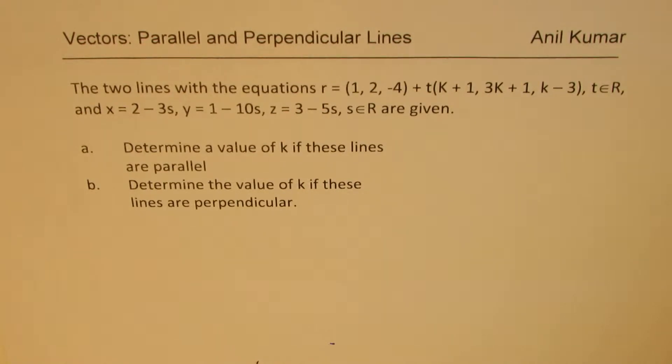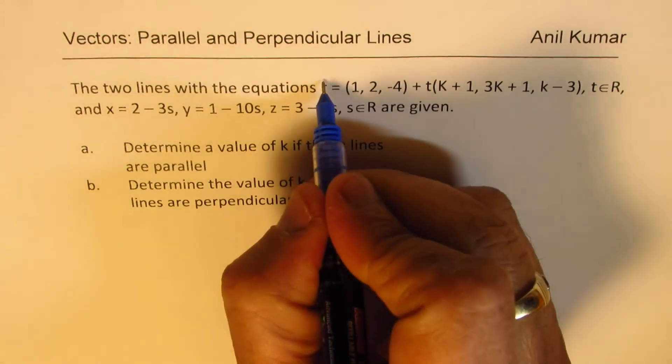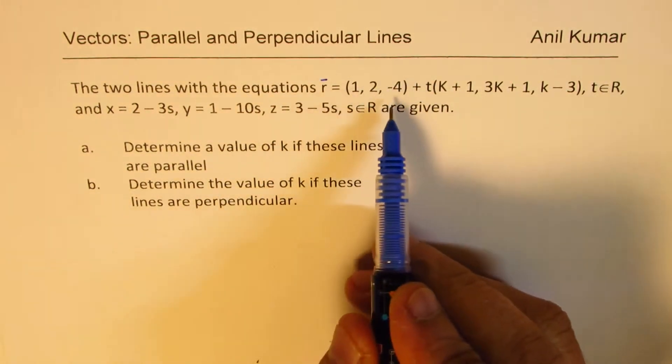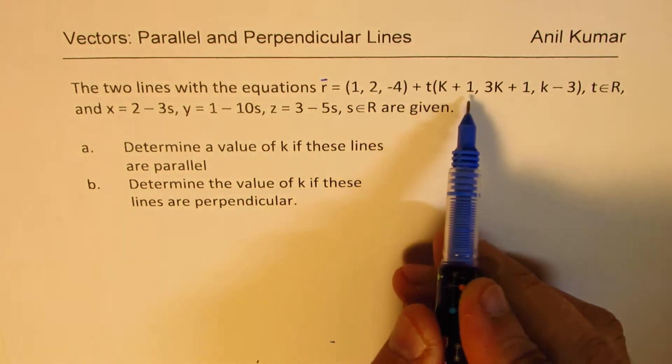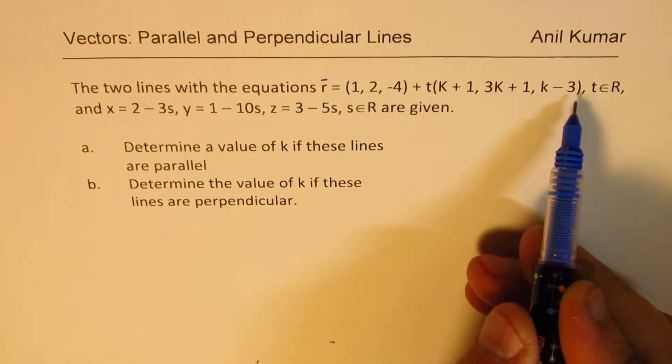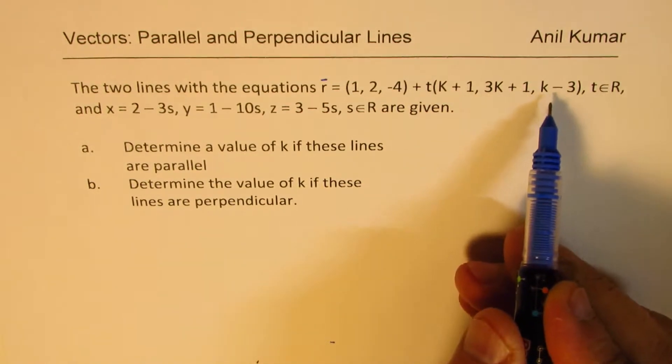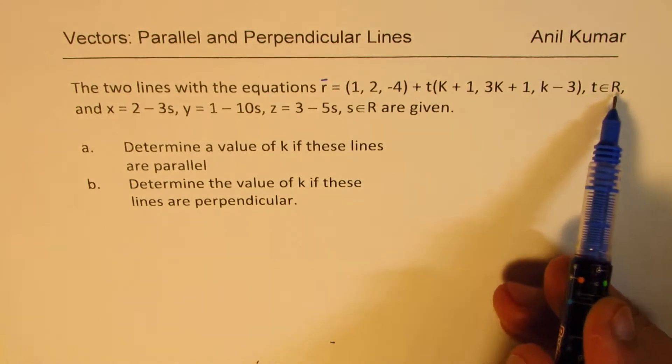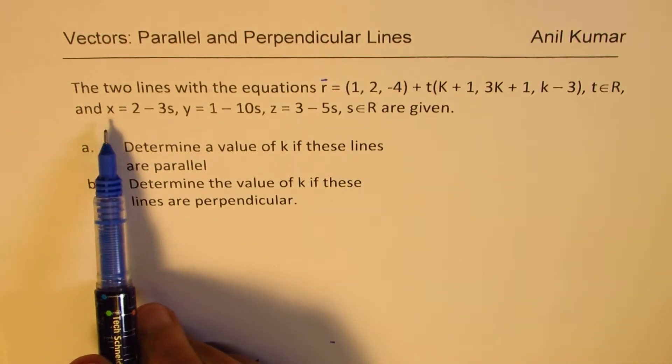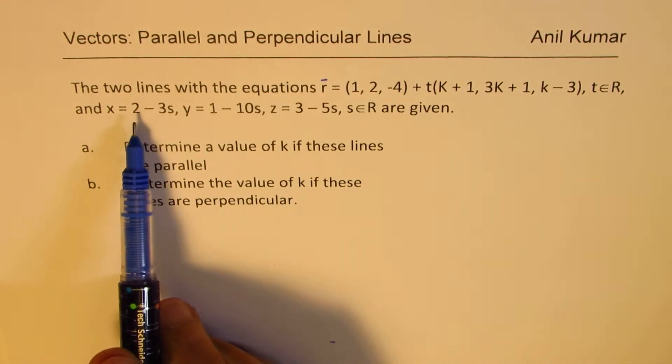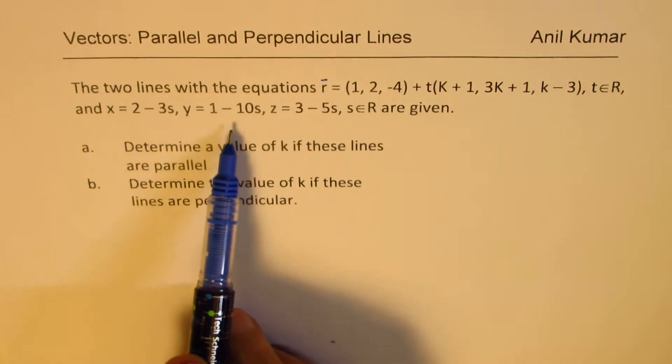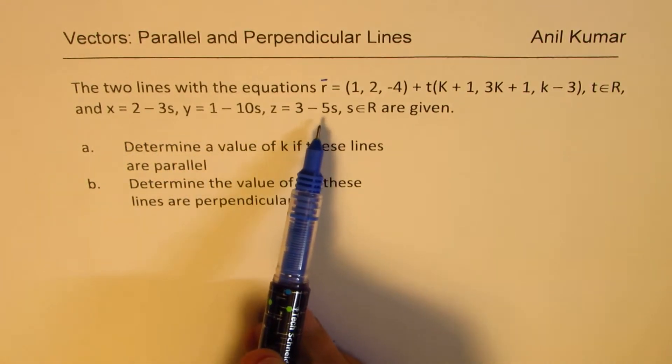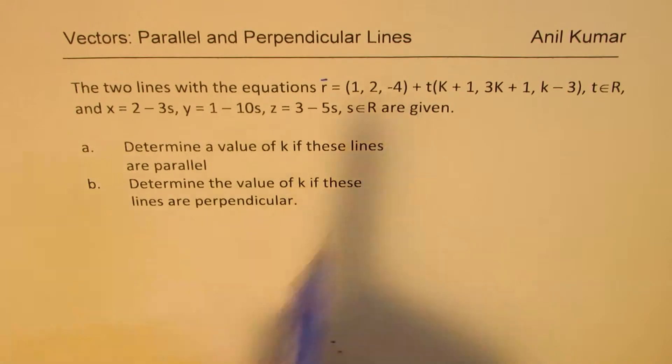We have an example here where we'd like to understand parallel and perpendicular lines. The question is: the two lines with equation r = (1, 2, -4) + t(k+1, 3k+1, k-3), where t ∈ R, and x = 2-3s, y = 1-10s, z = 3-5s, where s ∈ R, are given. So these are the two lines given to you.